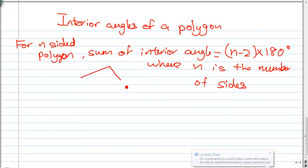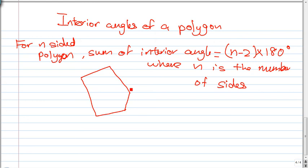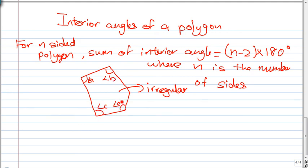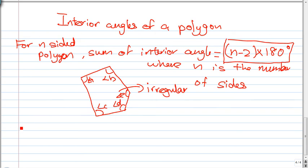You use this formula for an irregular polygon. If you have a five-sided irregular polygon with angles A, B, C, D, and E, the sides and angles are not equal in magnitude. To find the sum of these interior angles, apply the formula: (n minus 2) multiplied by 180.